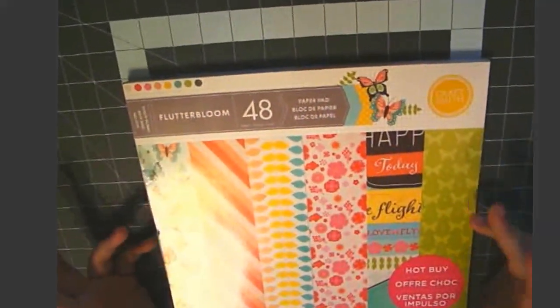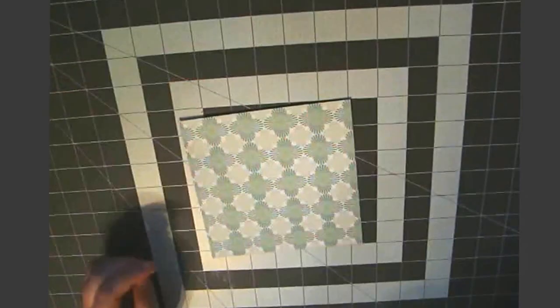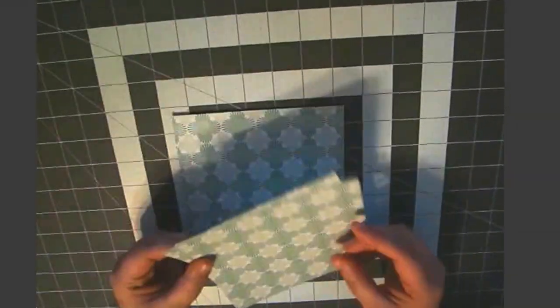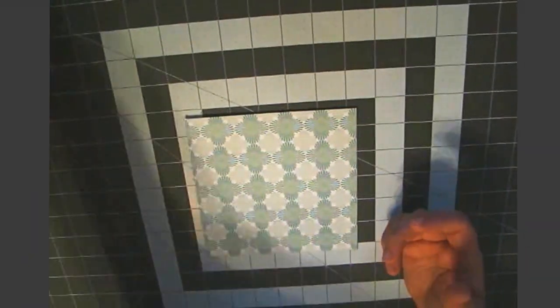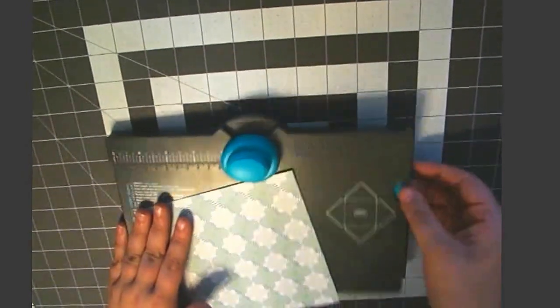I'm going to be using Flutter Bloom paper stack by Craftsmith. This is one of those hot buy pads that are like five dollars from Michaels, but it had a lot of bright pretty summery patterns. You can get four boxes out of your one 12 by 12 sheet, so that means you need a piece of paper that is 6 inches by 6 inches, which is 15 and a quarter by 15 and a quarter centimeters.